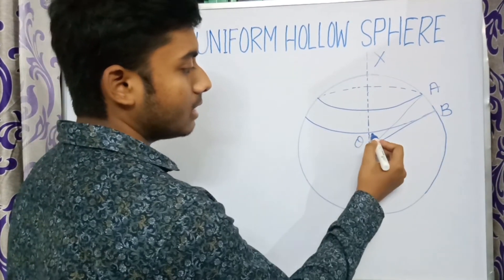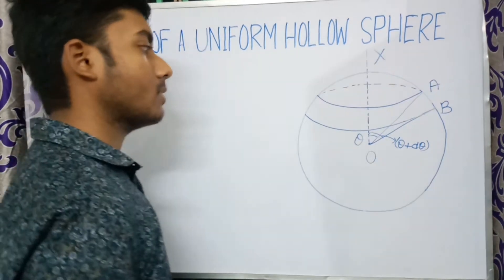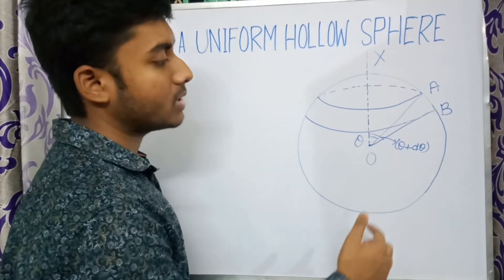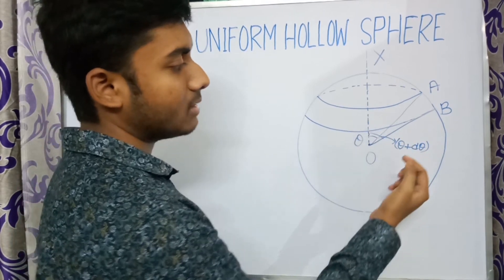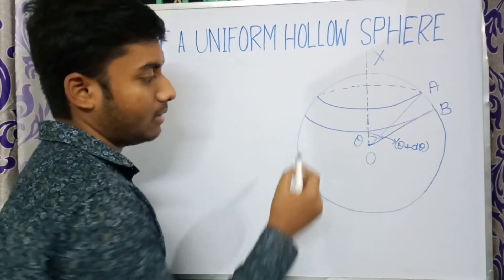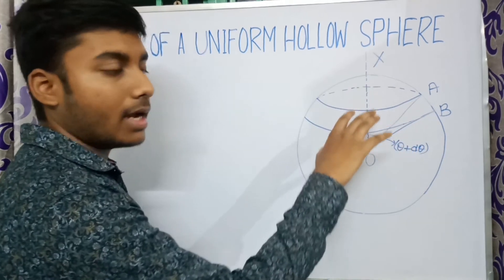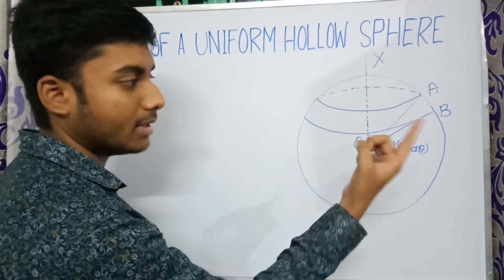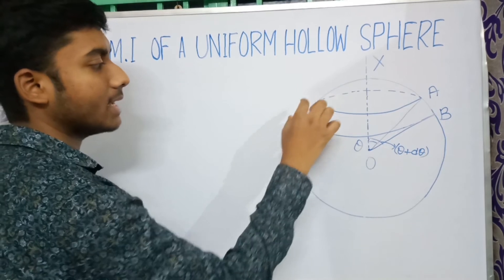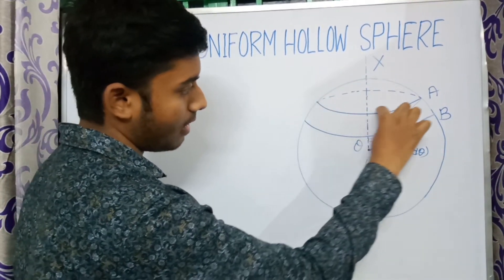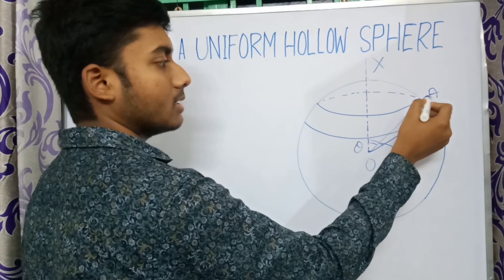Now if we consider another radius OB at an angle theta plus dθ and repeat the process, we will get another circle of larger radius. The part of the sphere between these two circles is a ring, and the width of this ring is R·dθ.